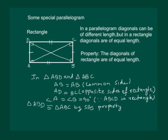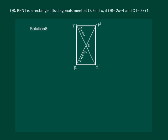Therefore AC is equal to BD, and hence it is proved that the diagonals of a rectangle are of equal length. Now let us read the question: RENT is a rectangle; its diagonals meet at O. Find X if OR is equal to 2x plus 4 and OT is equal to 3x plus 1.